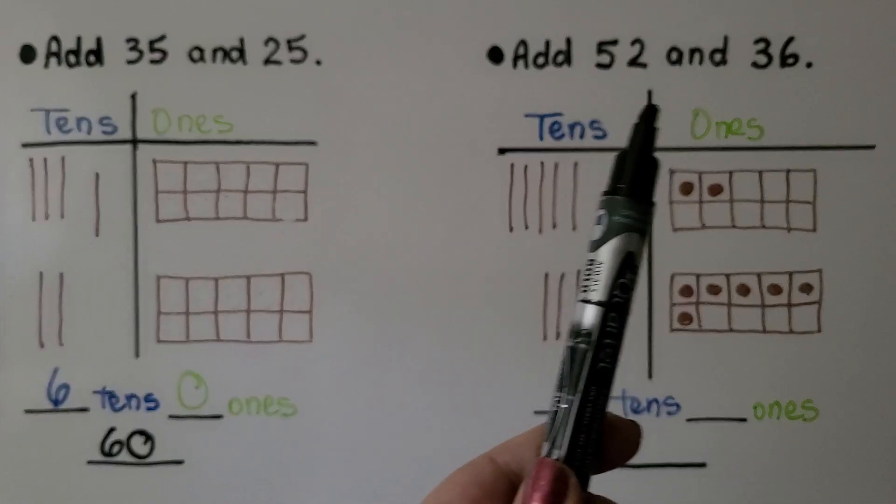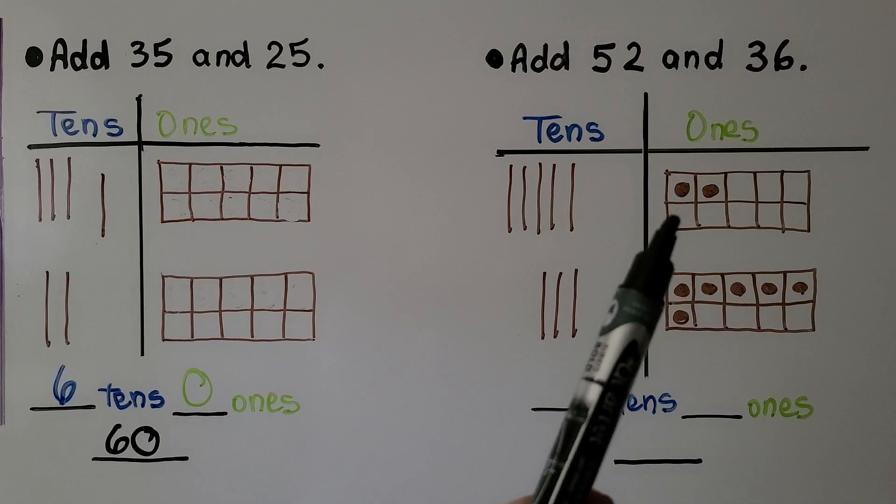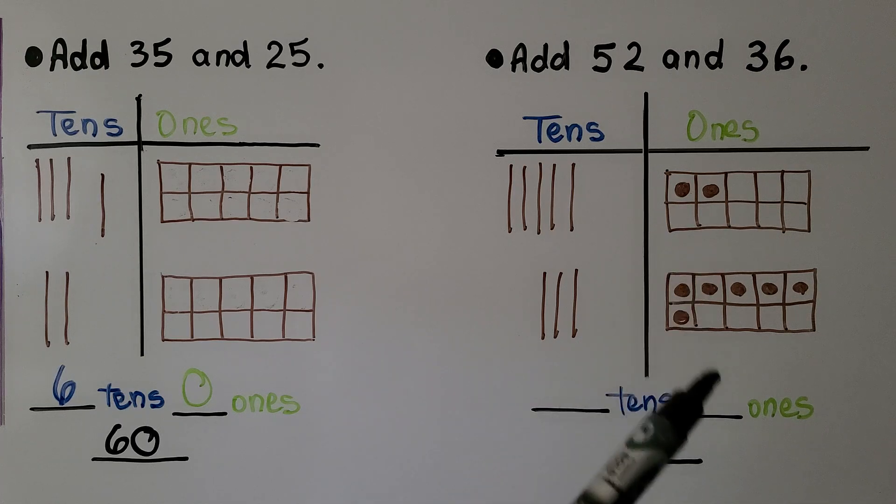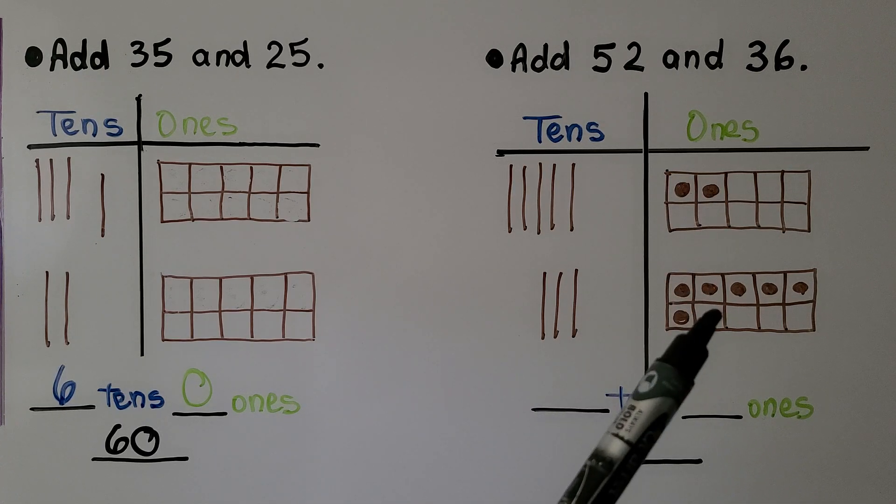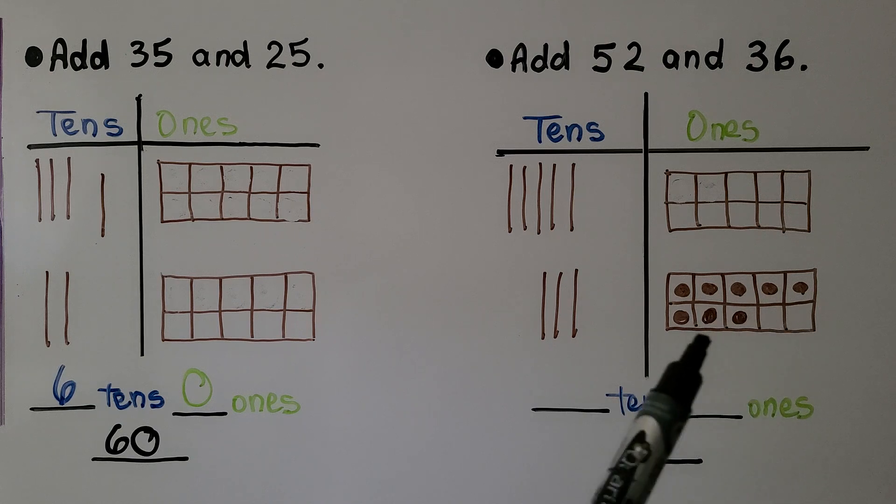Here we need to add fifty-two and thirty-six. So we have five tens, two ones for the fifty-two. We have three tens, six ones for the thirty-six. We can try to put them together to make a ten. Let's take these two and put them down here. Well, we didn't have enough to make a full ten. We only have eight.